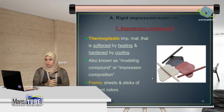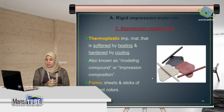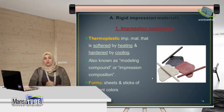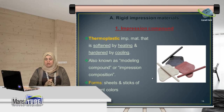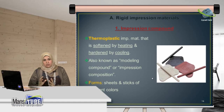Today we'll talk about rigid impression materials. The first example is impression compound, which comes in the form of sticks or sheets. These sticks and sheets are hard but are softened by heat. That is why this material is called a thermoplastic impression material — it is softened by heating and hardened by cooling. We soften it by heating, place it against the oral tissues in the soft state, let it cool down, and after cooling it becomes hard and set, then we can remove it from the oral cavity.